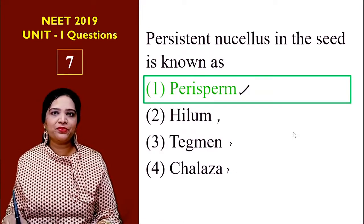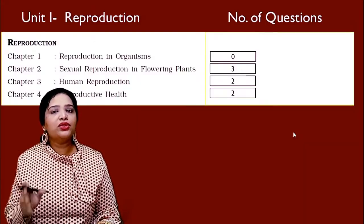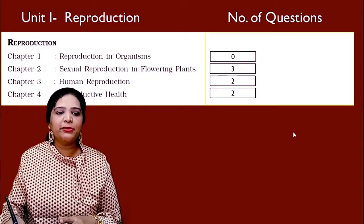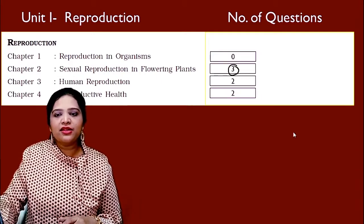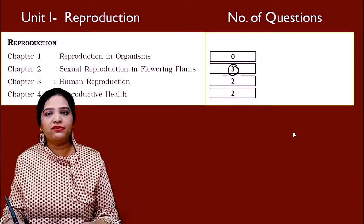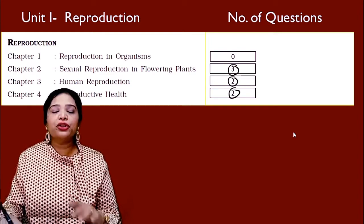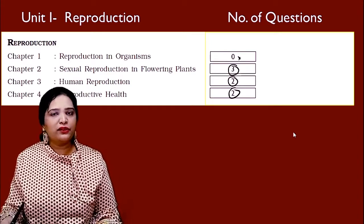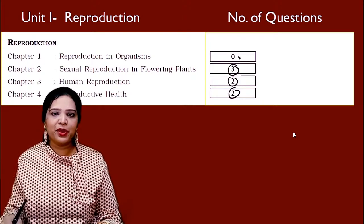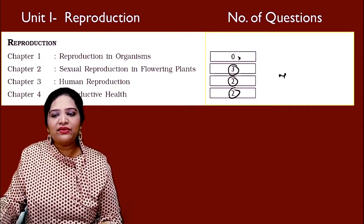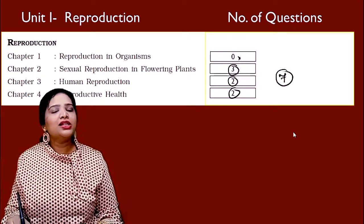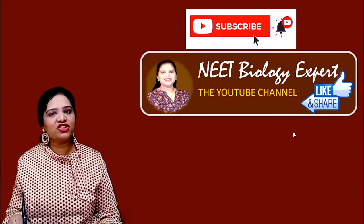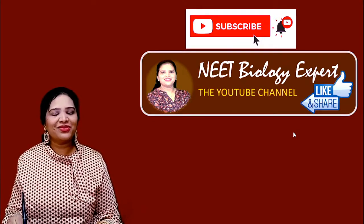So the answer is perisperm — not hylum, tegmen, or chalazam. In the 2019 NEET question paper, from the first unit of Class 12 Biology, three questions came from Sexual Reproduction in Flowering Plants, and two questions came from each of Human Reproduction and Reproductive Health. No questions came from the first chapter, Reproduction in Organisms. Totally seven questions are there from this first unit. I hope this session will be useful for you. If you like this, like, comment, share, and subscribe to our channel, Meet Biology Expert. Thank you.